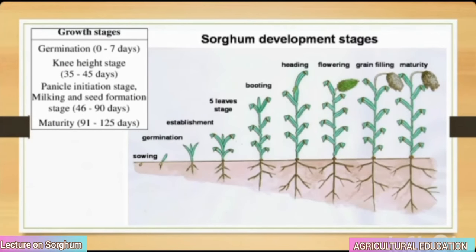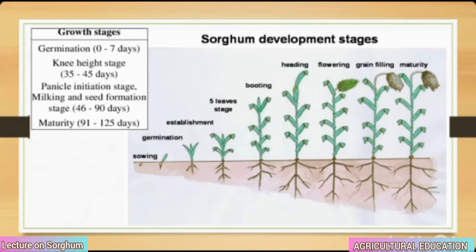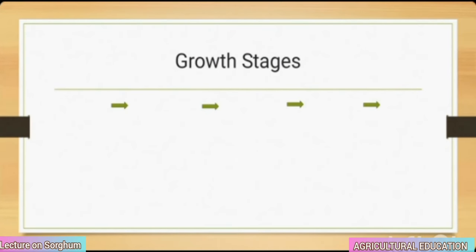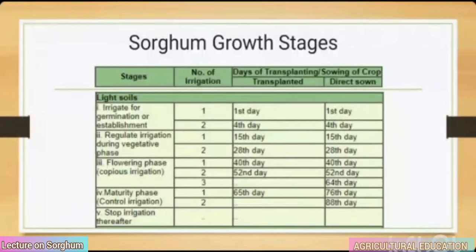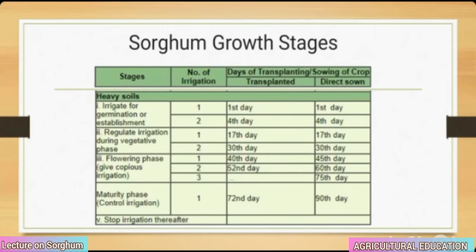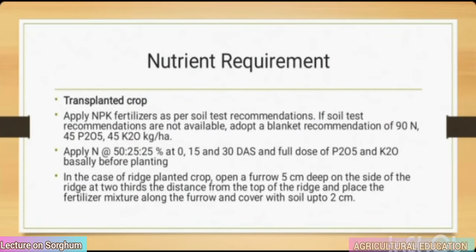Growth stages: germination 0 to 7 days; knee-height stage 35 to 45 days; panicle initiation stage, milking and seed formation stage 46 to 90 days; maturity 91 to 125 days. Nutrient requirement for transplanted crop: apply NPK fertilizers as per soil test recommendations.